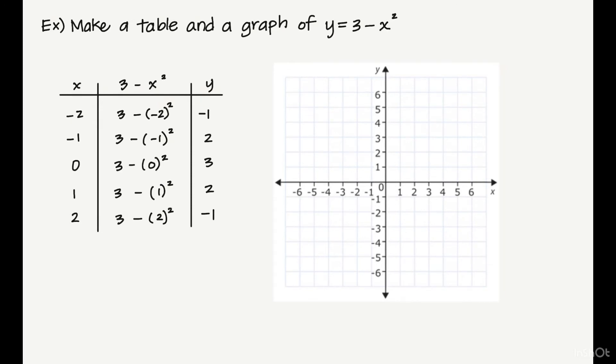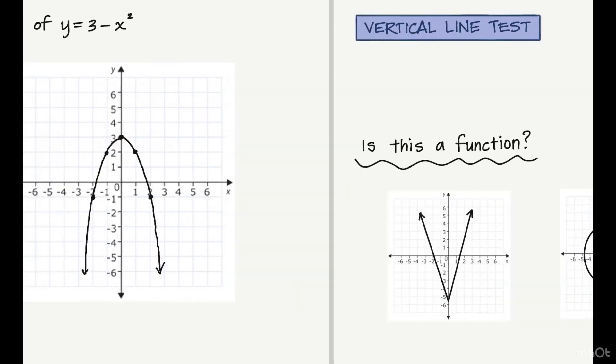Let's go ahead and plot those. Negative 2 down to negative 1. Negative 1 up to 2. Zero up to 3. One up to 2. And 2 down to negative 1. If you notice, these points are forming a curved line instead of a straight line. This is actually forming what's called a parabola. So there is another example for you.